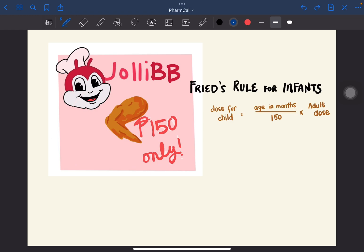Next is Fried's rule for infants. As you can see here, I put Jolly BB since Fried's rule is automatic for infants. Infants signify one month to one year.